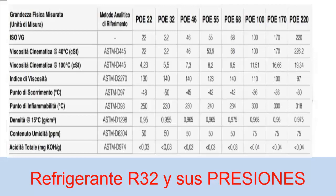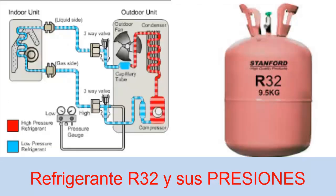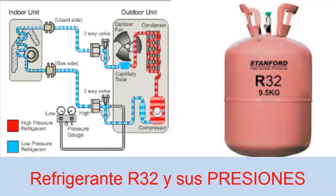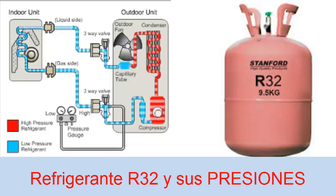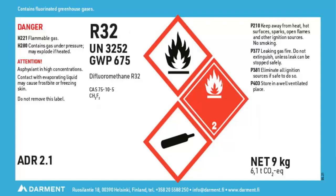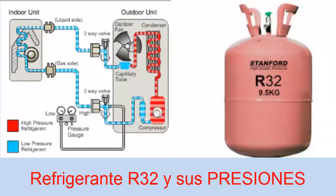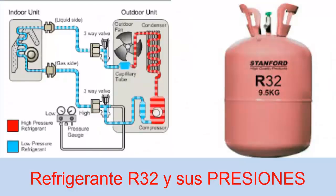This viscosity is very important — in all refrigerant gases it is very important, but in R32 it plays an essential role. Why? Because R32 has many capabilities. For example, it has a very low global warming potential. Compared to its competitors like R410A, the GWP of R32 is 675.